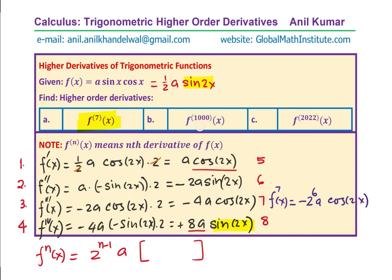How do we get thousandth derivative? Well, thousand is a multiple of 4. This is a multiple of 4. Thousandth derivative will be same as the fourth derivative. Because 4 is also a multiple of 4. We will have thousandth derivative as equal to plus 2^(1000 minus 1), 2^999 A sin 2x.